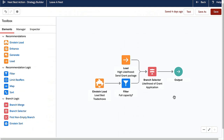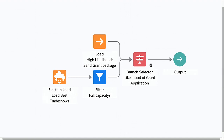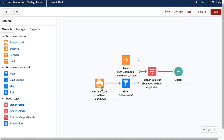As you scroll down, Einstein is recommending the Tokyo Researcher Annual Conference as a relevant trade show for her. Let's go under the hood. We are now in Einstein Next Best Action, and this is the strategy I created for LevaNest. I want to focus on the likelihood of grant application — if the likelihood is high, we send them a grant package. What's more interesting is what happens when the likelihood is really low: that is when we load AI-powered trade show recommendations using Einstein Recommendation Builder.